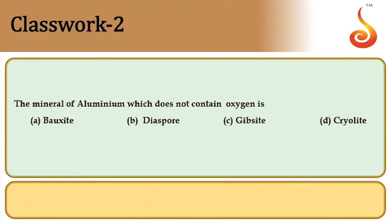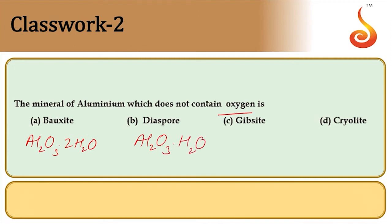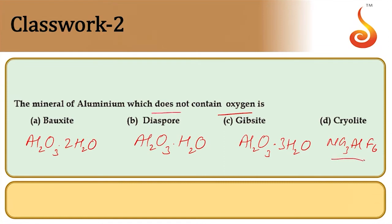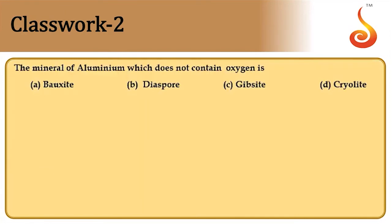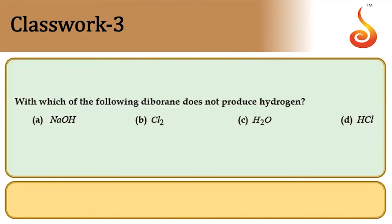Which mineral of aluminium does not contain oxygen? Bauxite is Al₂O₃·2H₂O; diaspore is Al₂O₃·H₂O; gibbsite is Al₂O₃·H₂O; cryolite is Na₃AlF₆. Cryolite has no oxygen atom. Answer is option D.